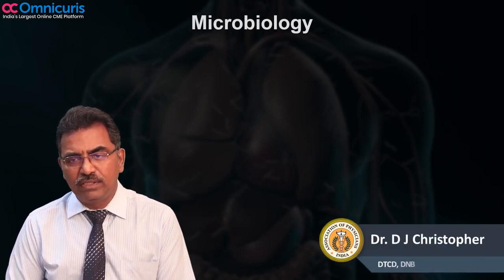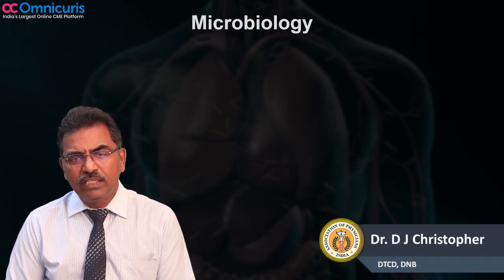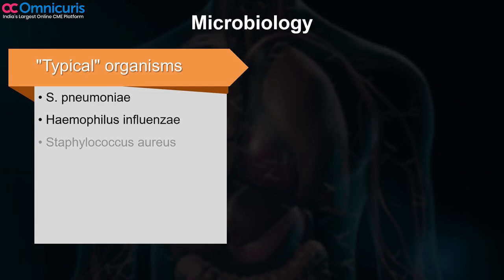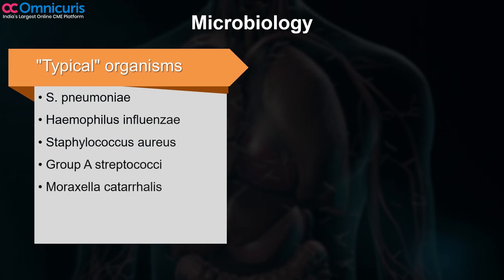Let's look at the microbiology. The organisms that cause typical pneumonia are Streptococcus pneumoniae, Haemophilus influenzae, Staphylococcus aureus, Group A Strep, Moraxella catarrhalis, anaerobes, and aerobic gram-negative bacteria.